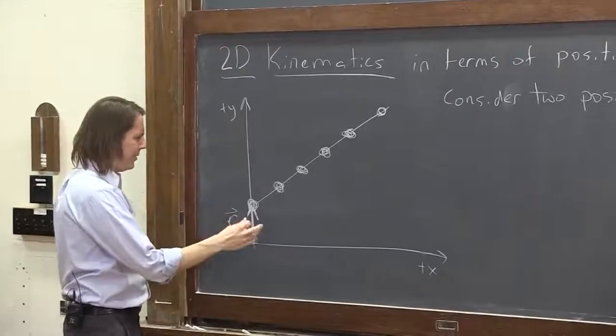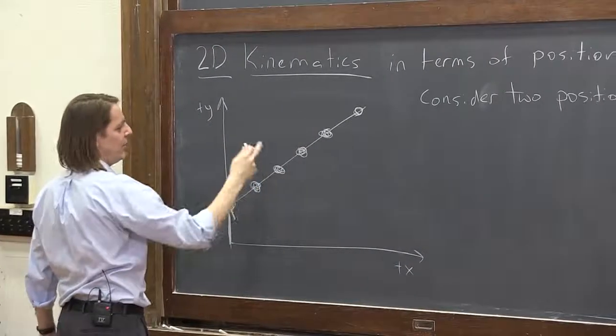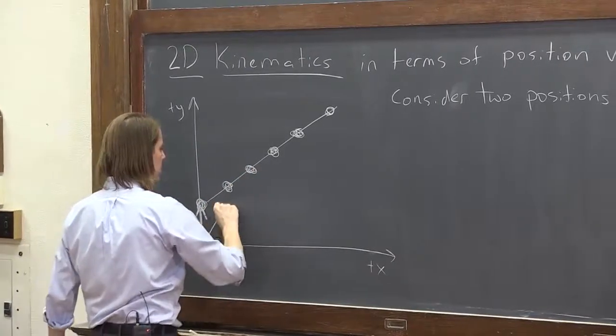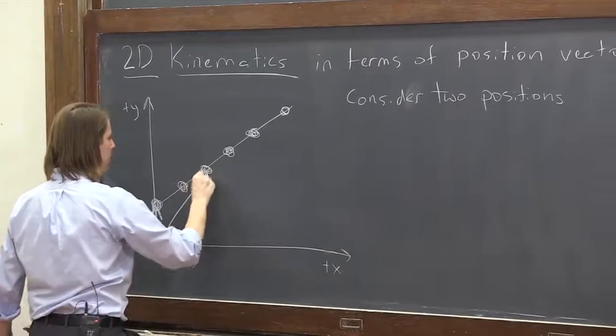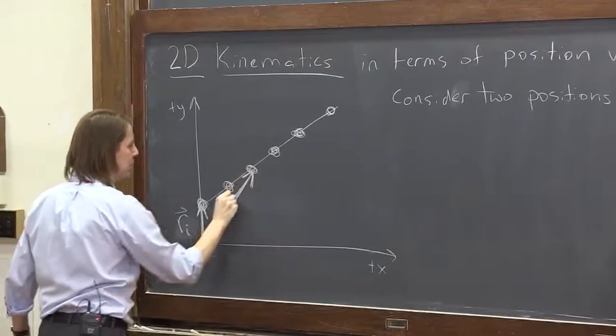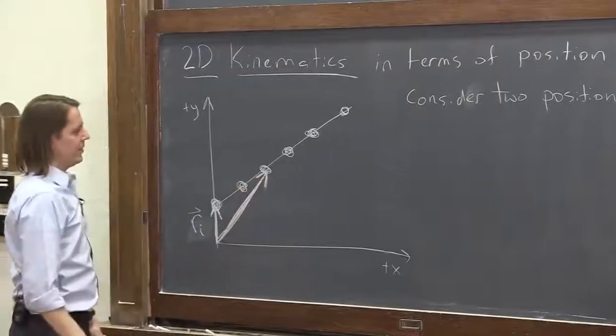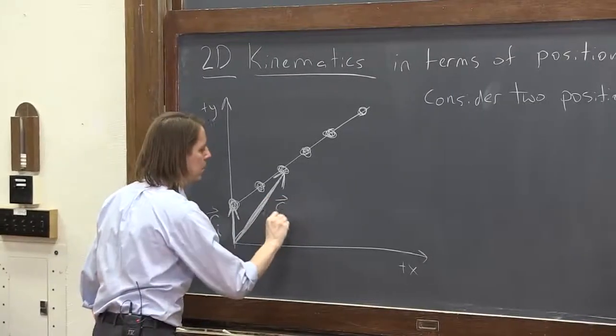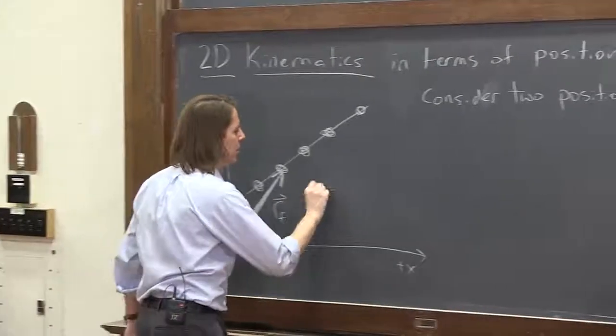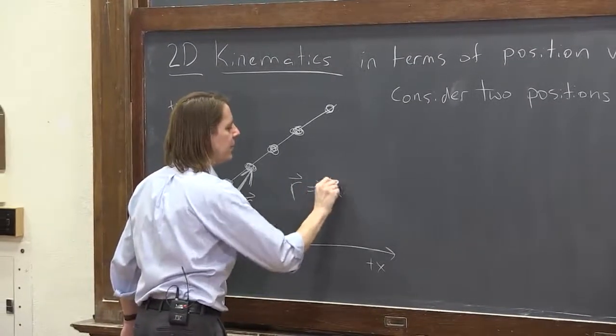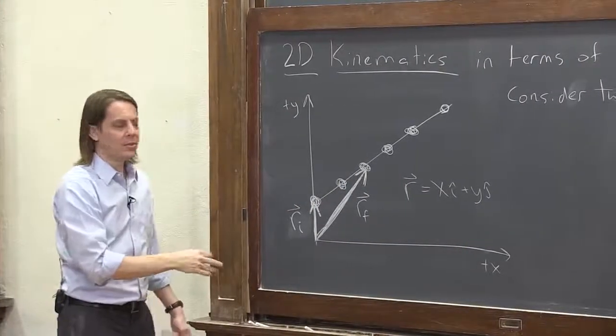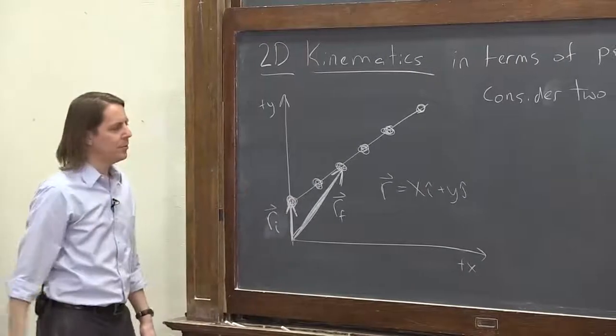For r final, let's just pick another point along the motion. Let's say here. So now I'm going to draw r final. And in general, there's nothing mysterious about these. r really is just x i hat plus y j hat. It's just where you are in the x and y axis, just drawn as a vector from the origin.